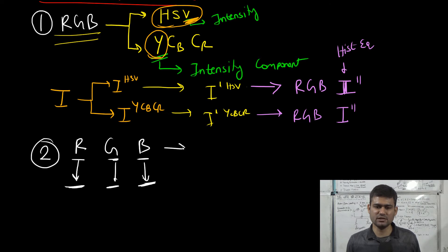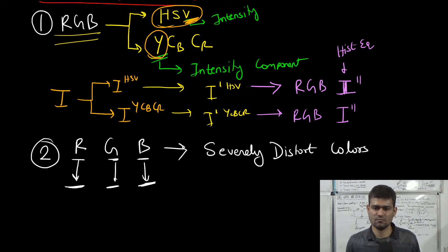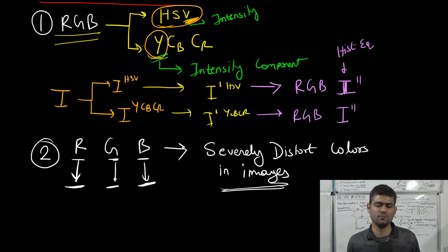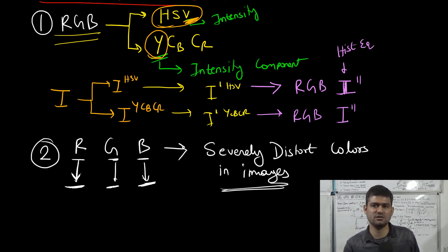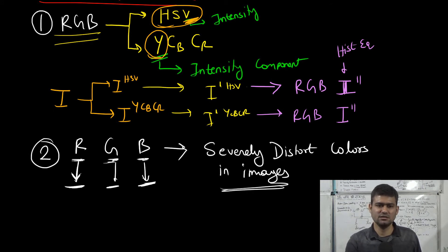The problem with this approach is that it has the potential to severely distort the colors in images. This is because the R component is not the intensity or brightness value of a pixel — it is the intensity of the red channel only. This is not the same as the overall brightness, which is why separately equalizing these channels can be problematic.